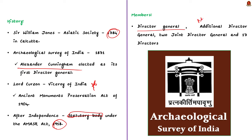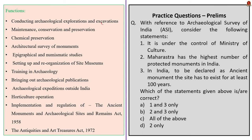The functions of ASI include: firstly, conducting archaeological excavation and exploration; secondly, preserving protected monuments and archaeological sites of national importance; thirdly, engaging in chemical protection of monuments and antiquarian remains. Additionally, ASI conducts archaeological surveys of monuments as well as epigraphical and numismatic studies of sites, and sets up site museums to display these findings. An important point: ASI also conducts archaeological expeditions outside India, and engages in horticulture operations in and around archaeological sites.